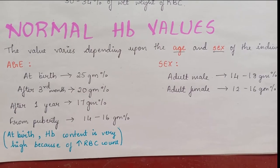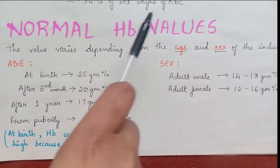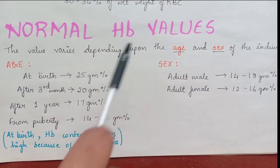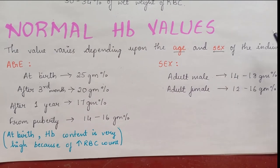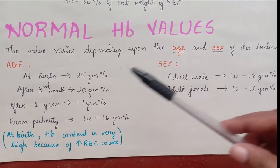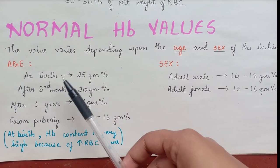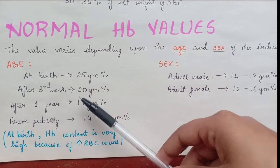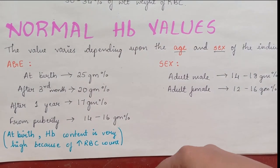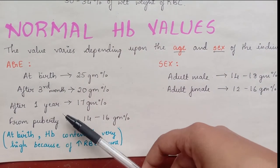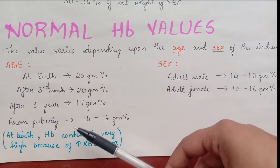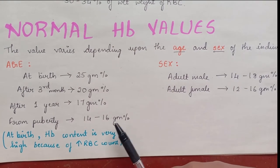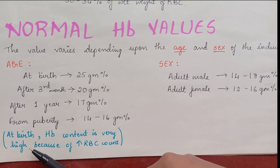Normal values of hemoglobin vary depending upon the age and sex of the individual. At birth, 25 gram percent of hemoglobin is present. After 3 months it is 20 gram percent, after 1 year it is about 17 gram percent, and from puberty it is 14–16 gram percent.